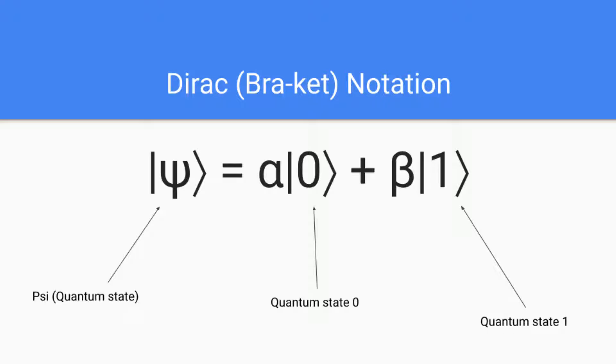To represent qubits there are two main ways. First is through Dirac or bra-ket notation, and the other is through vector representation. First let's talk about the Dirac notation. In the Dirac or bra-ket notation we use these things called kets, which is that line and the greater than symbol. We use that symbol to represent quantum states.